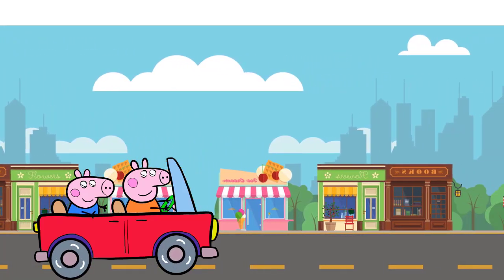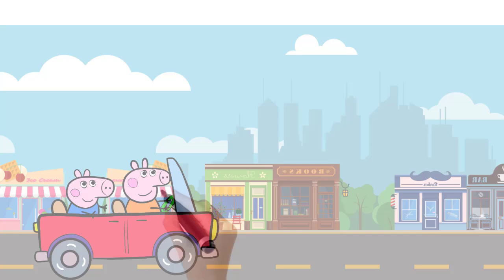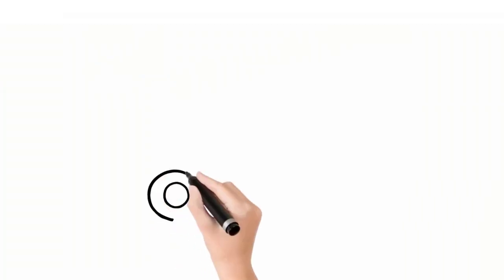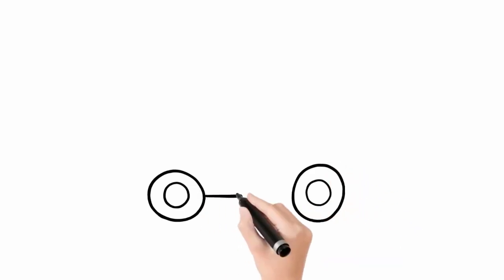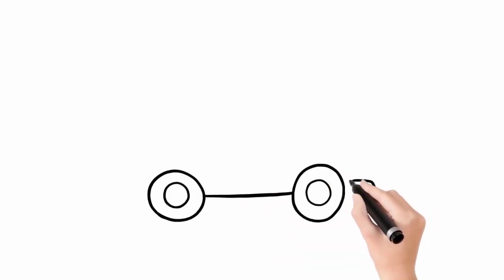Let's draw and paint together. First we're drawing the car's wheels. Next we're drawing the body of the car.